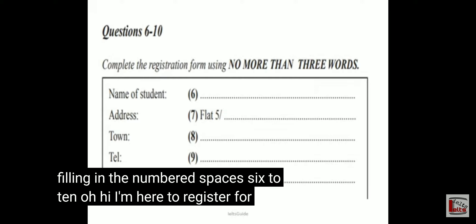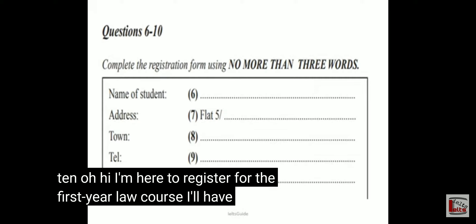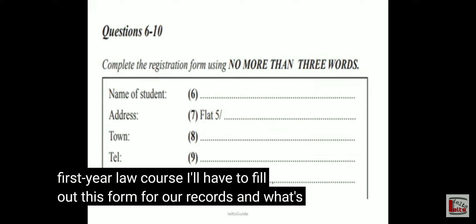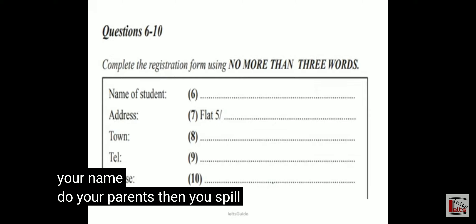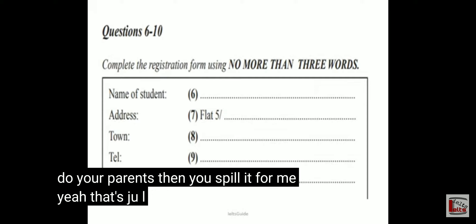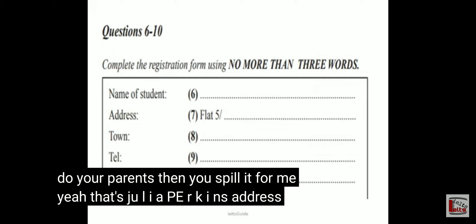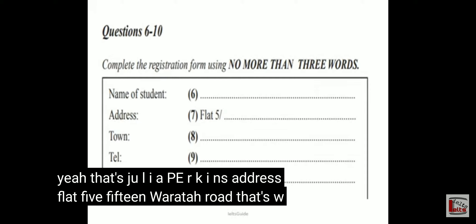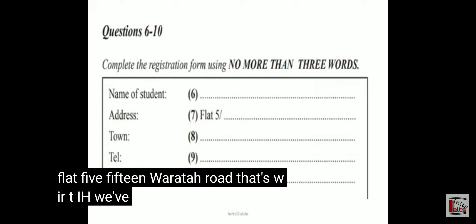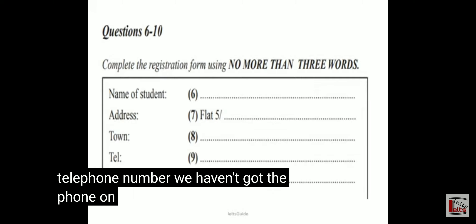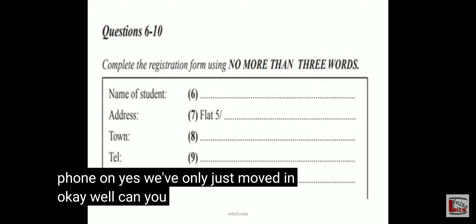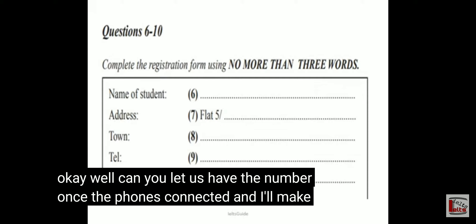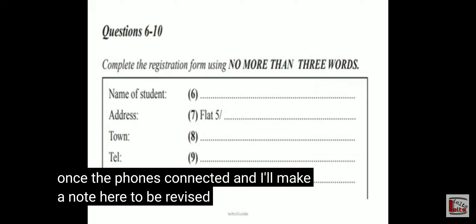Oh, hello. I'm here to register for the first year law course. I'll just have to fill out this form for our records. What's your name? Julia Perkins. Can you spell that for me? J-U-L-I-A P-E-R-K-I-N-S. Address? Flat 5, 15 Waratah Road — that's W-A-R-A-T-A-H — Brisbane. And your telephone number? We haven't got the phone on yet, we've only just moved in. Can you let us have the number once the phone's connected? I'll make a note here — to be advised.